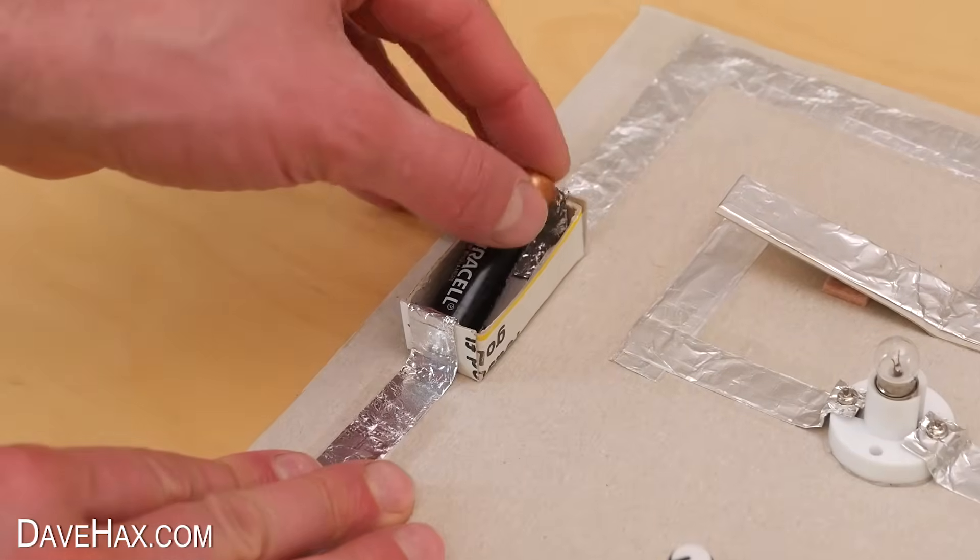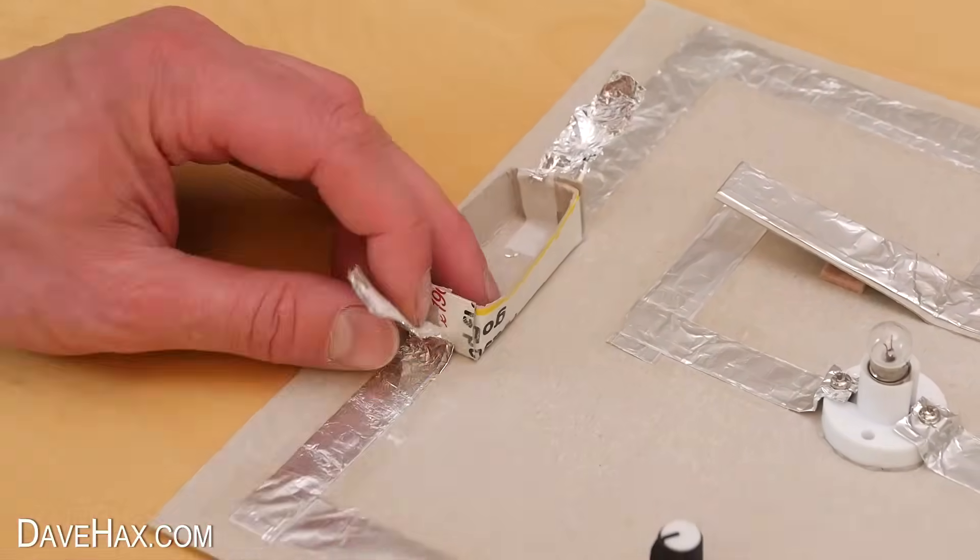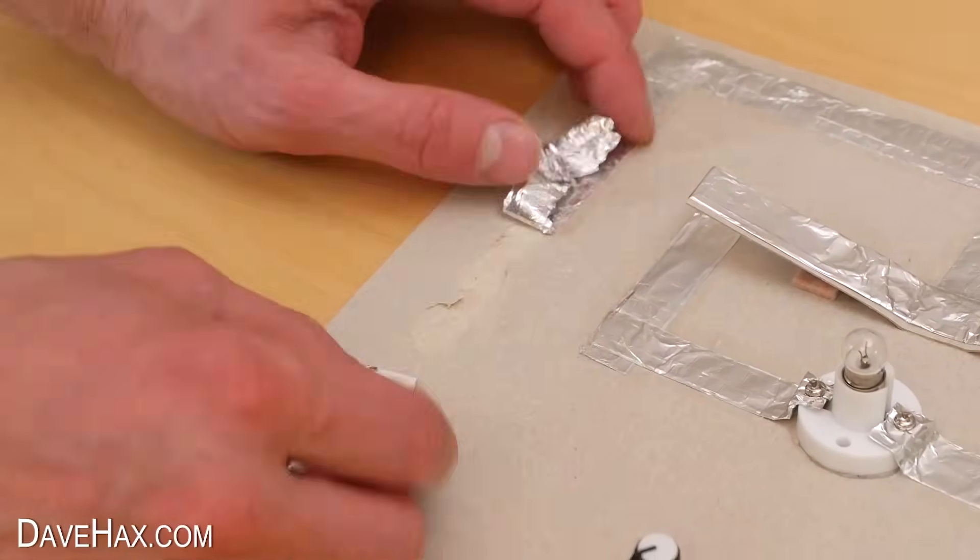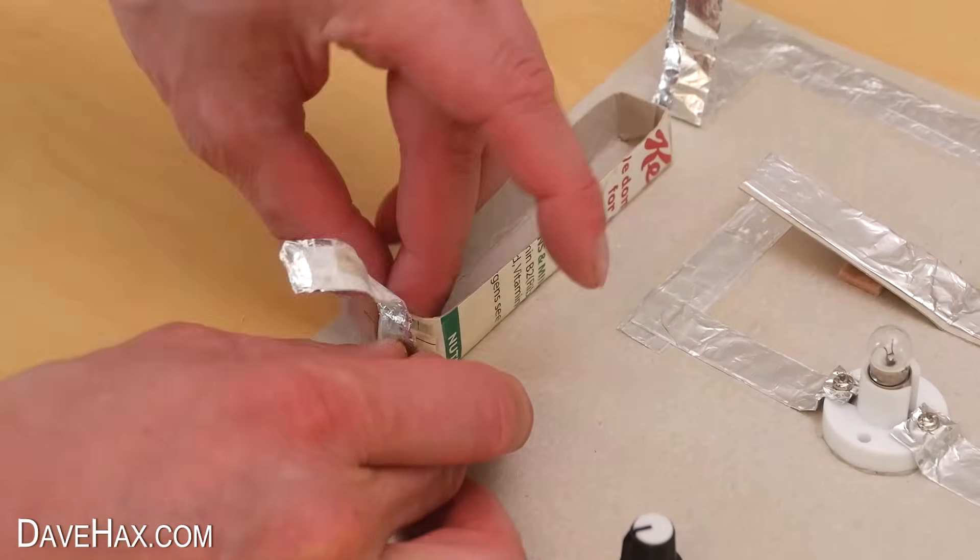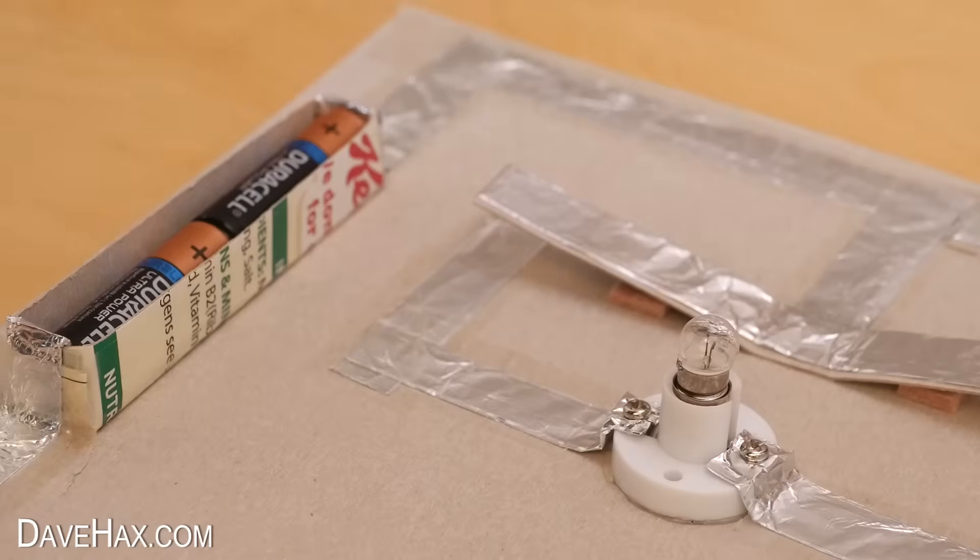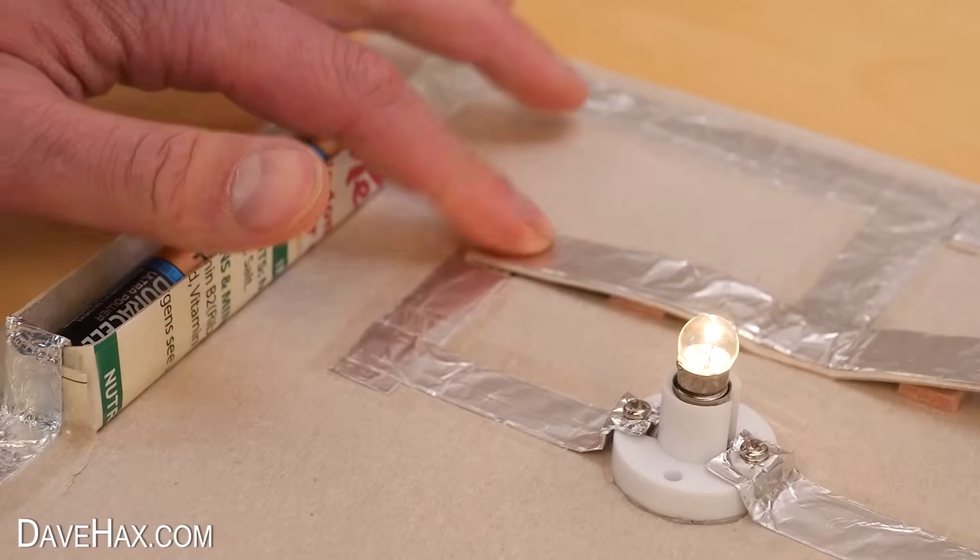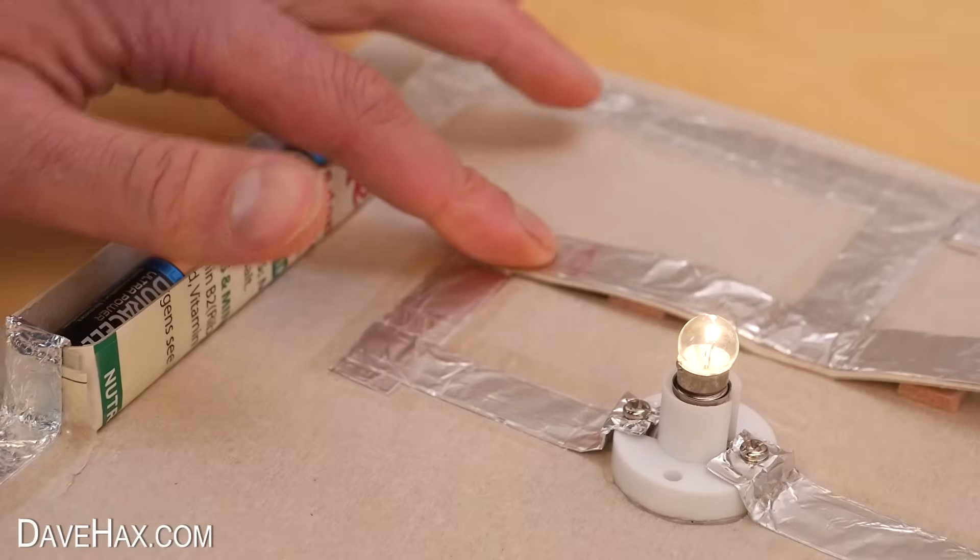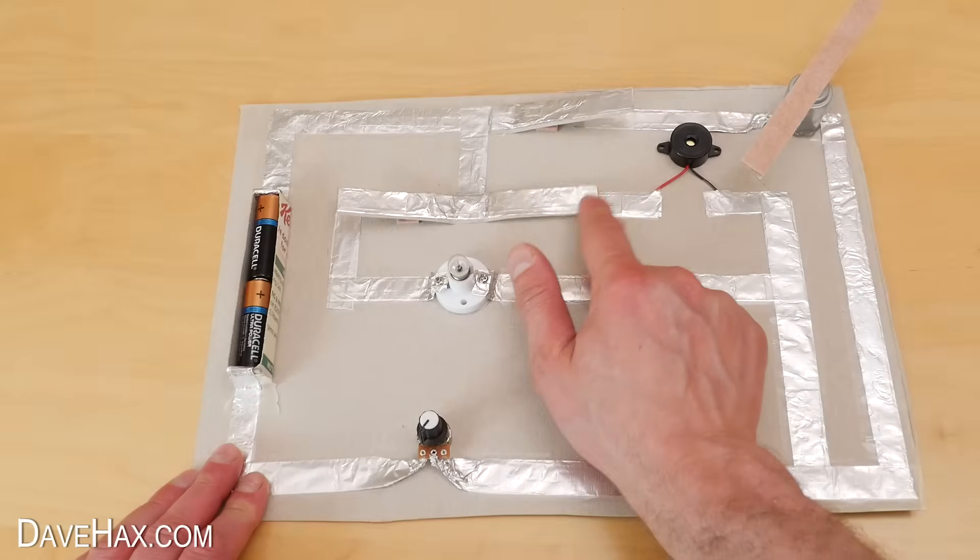So I decided to remove the battery, peel back the foil and exchange the battery holder for a new one I've made which holds two batteries instead of one. Now when I press the switch the bulb lights up nice and bright. Everything now works as it should.